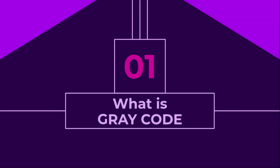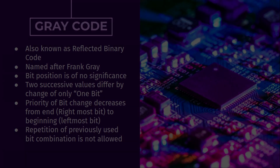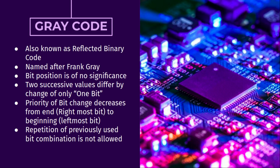In this subsection, we will learn what is gray code and how to represent numbers in gray code. Gray code, also known as reflected binary code, is named after Frank Gray. The bit position in gray code is of no significance, and two successive values differ by a change of only one bit. Priority of bit change decreases from the rightmost bit to the leftmost bit, and repetition of previously used bit combinations is not allowed.